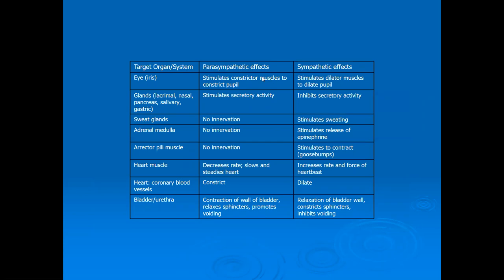For the eye, the parasympathetic stimulates the constrictor muscles to constrict the pupil — because most of our day we're in the light and we need to regulate the amount of light entering the eye. For digestion, parasympathetic stimulation activates the secretory activity of all the glands associated with the digestive tract: lacrimal, nasal, salivary, pancreatic, and gastric glands. The adrenal medulla, as we mentioned, is not innervated by the parasympathetic — we just stop the sympathetic signal rather than send a parasympathetic stop signal.